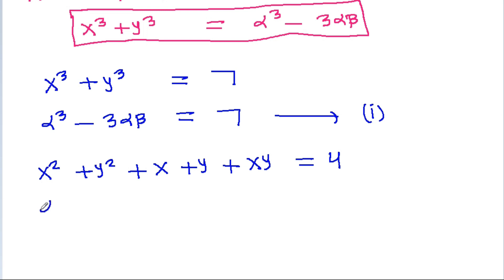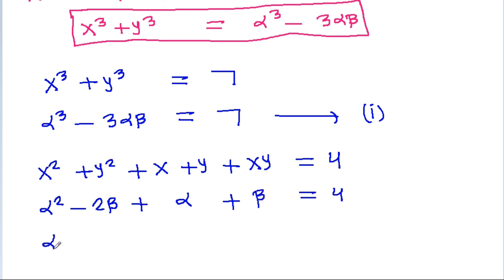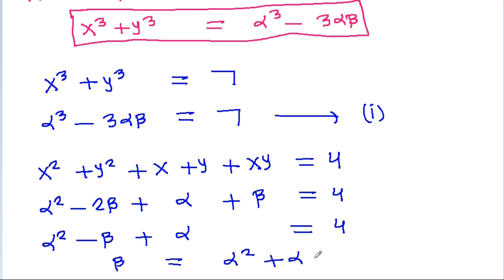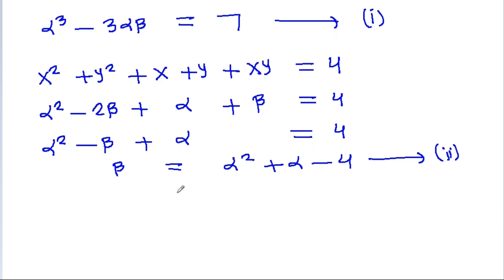And x²+y²+x+y+xy equals α²-2β+β+α, which simplifies to α²-β+α=4. So β=α²+α-4. This is equation 2.